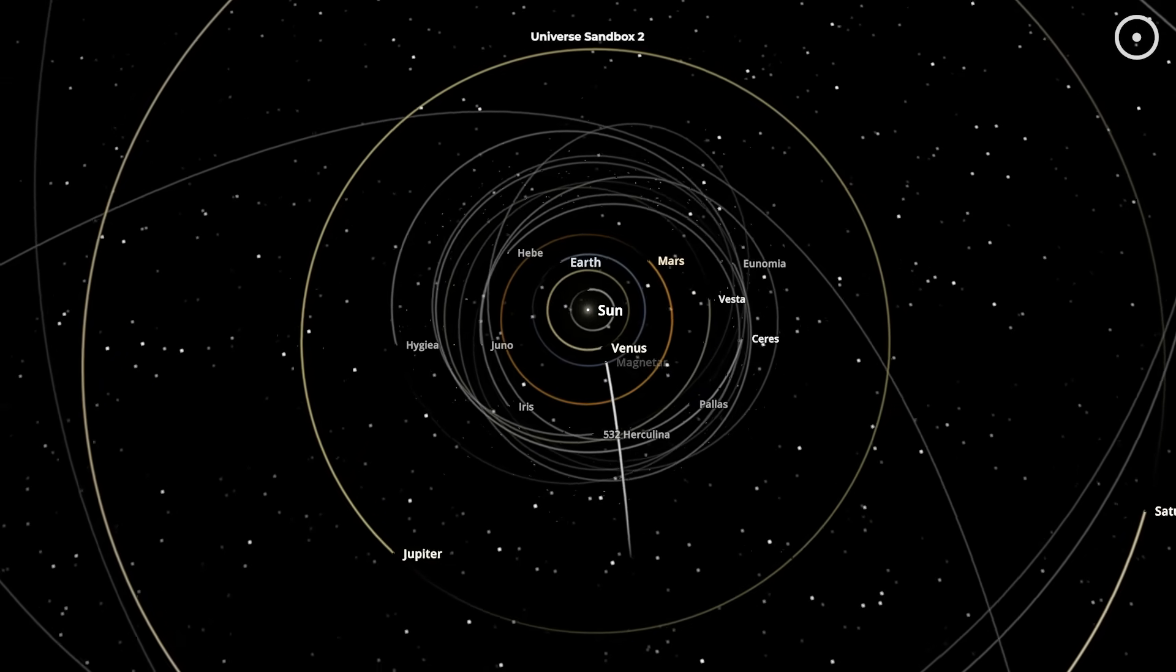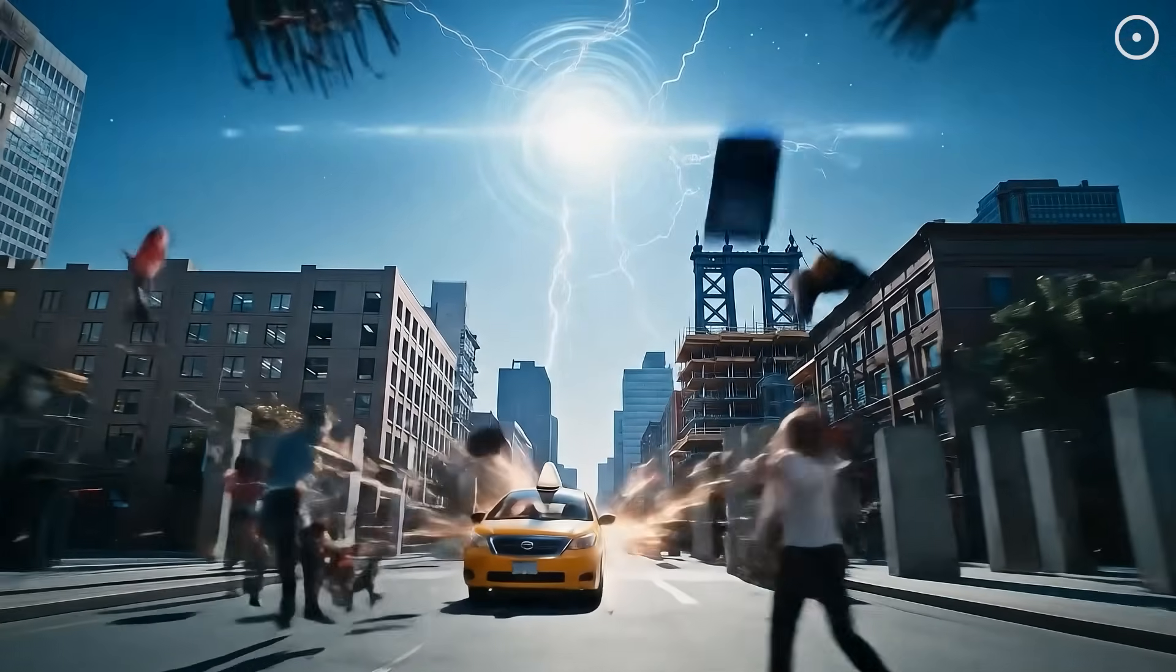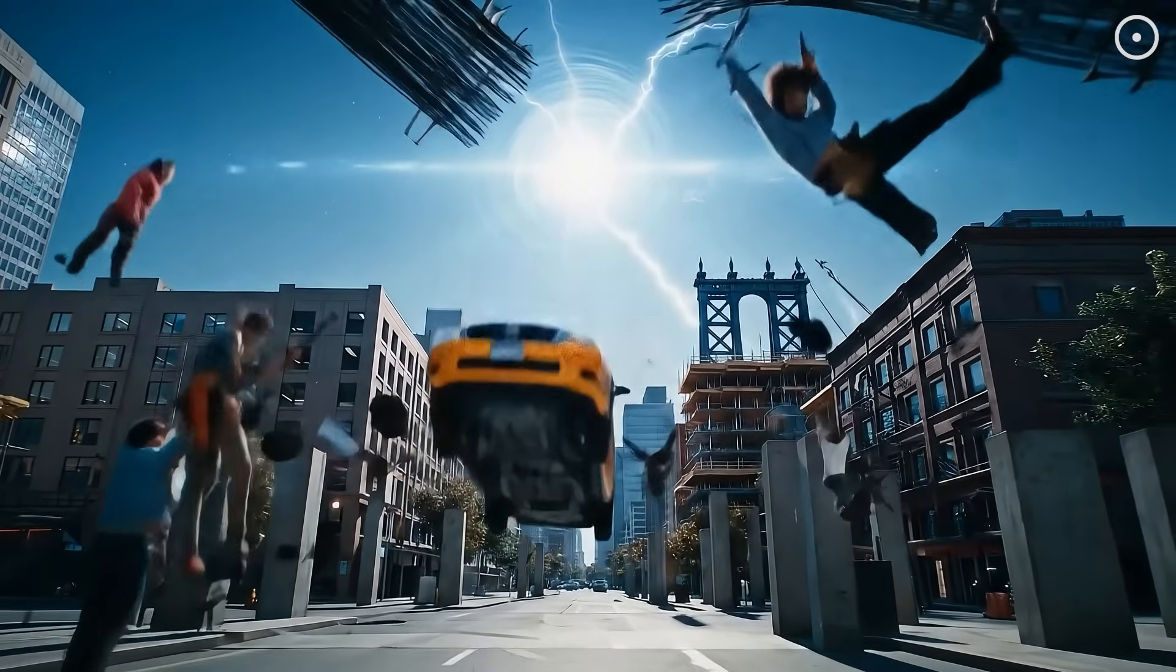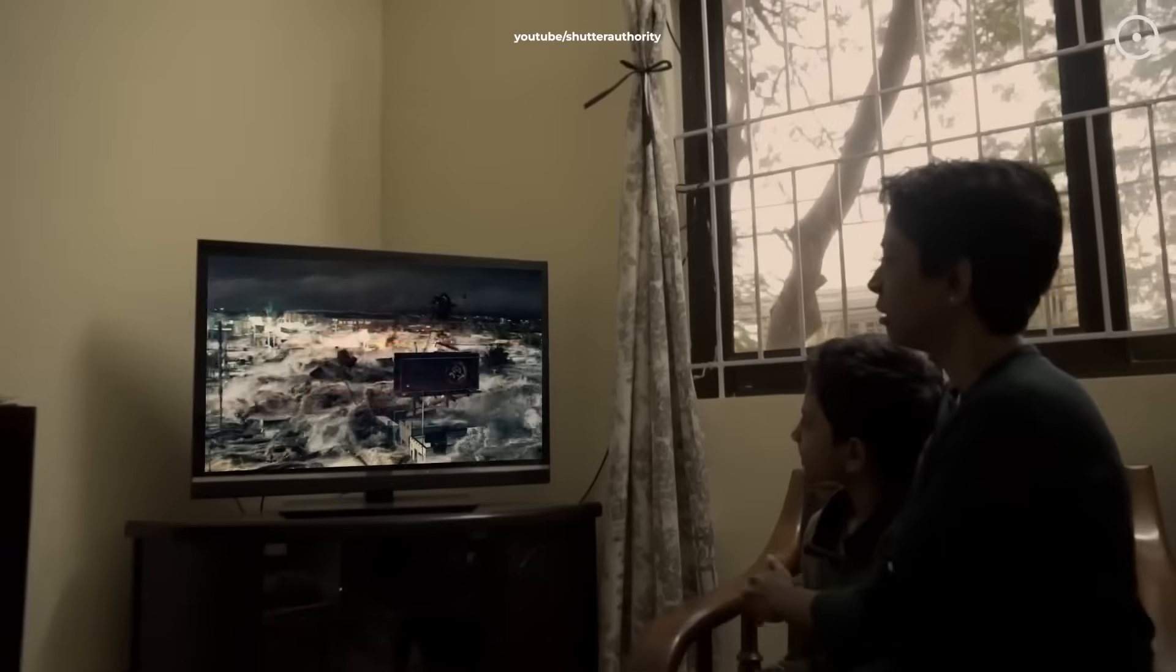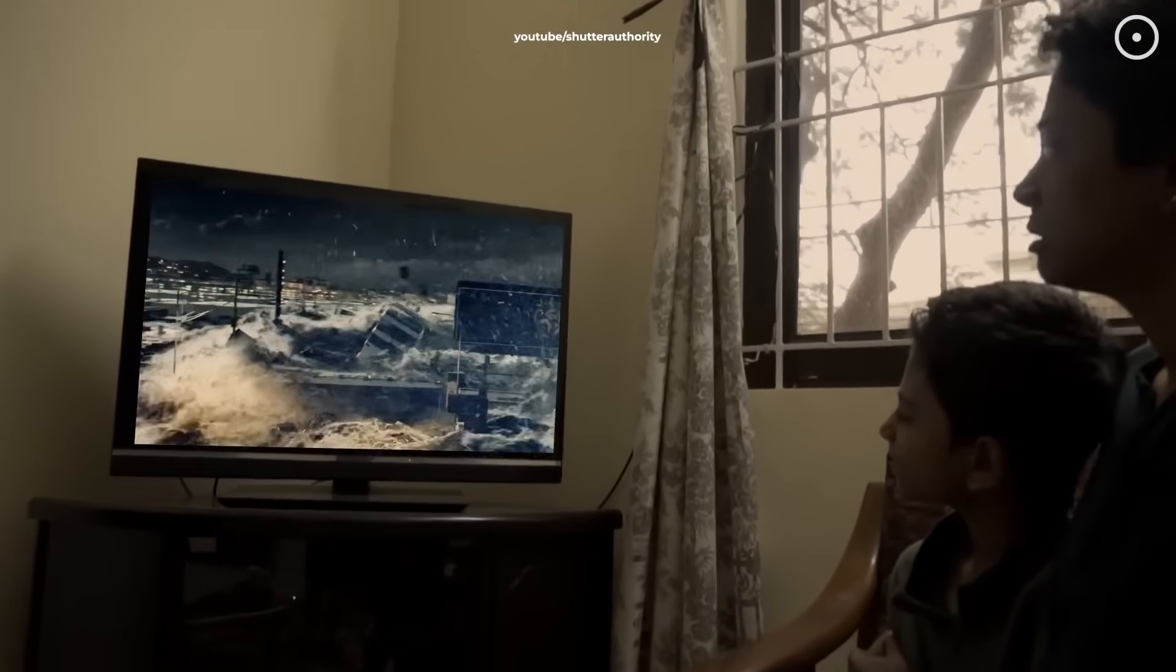At 1,000 miles away, the magnetic field would be strong enough to levitate any metallic object on Earth's surface. Cars would float, buildings with steel frames would crack and twist as their metal components are pulled skyward.